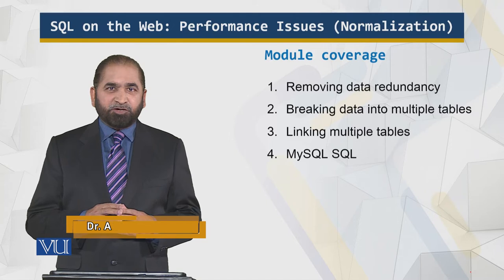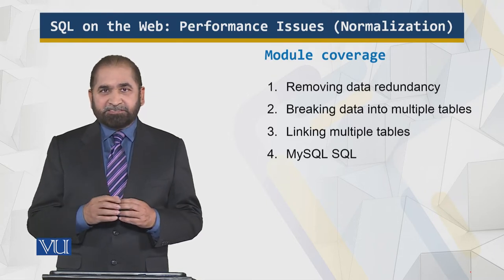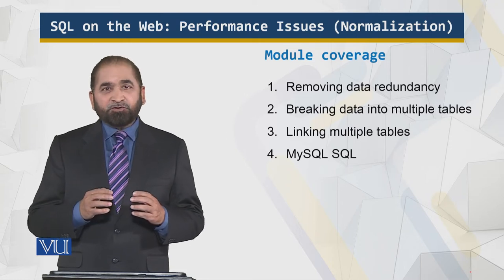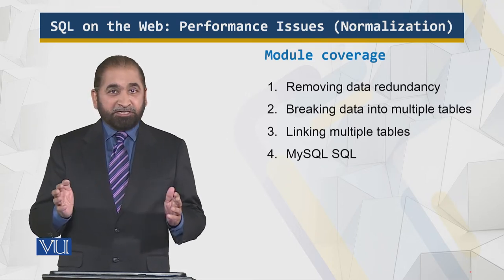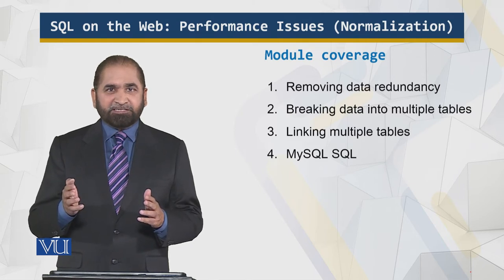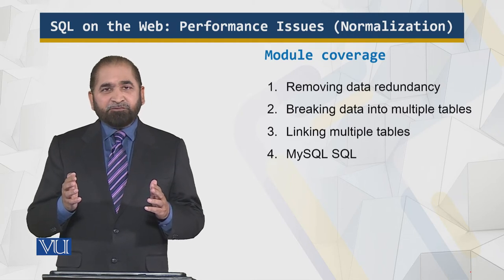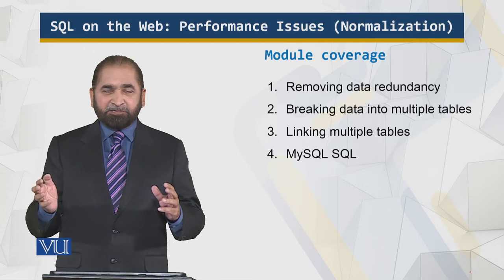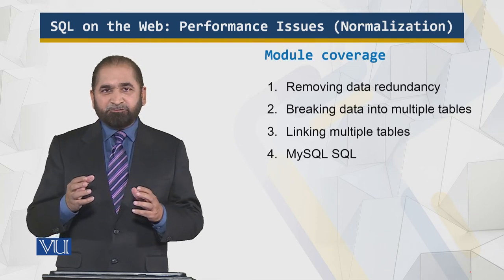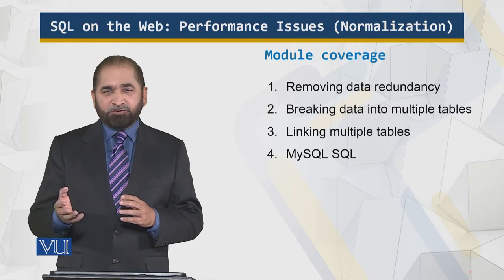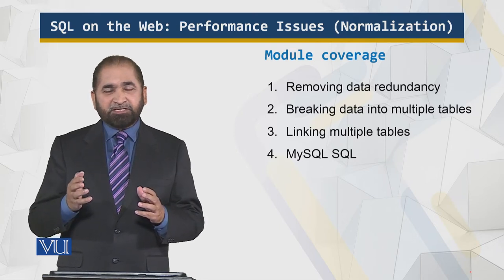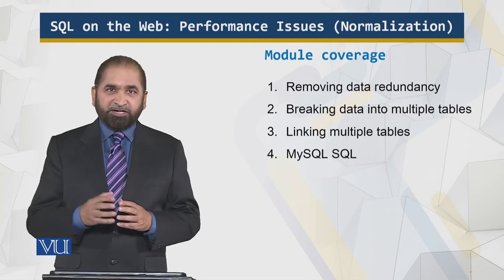This is the module coverage for this module: removing data redundancy. Redundancy is data which is getting repeated and that data doesn't change. So we break the data into multiple tables — a table of more or less static data and a table of changing data. I will go into the details and show you a picture. Then when we have this static data table and dynamic data table, we need to link them together — that is what the relational model is all about. And of course, we will briefly talk about MySQL SQL. MySQL is the database and SQL is the structured query language. So let's go ahead with this module.